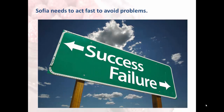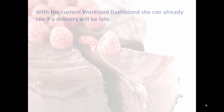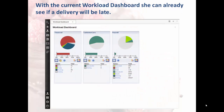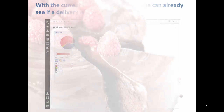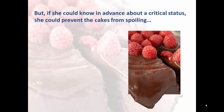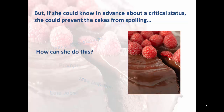Sophia needs to act fast to avoid problems. With the current Workload Dashboard, she can already see if a delivery will be delayed. But if she could know in advance about a critical status, she could prevent the cakes from spoiling. How can she do this?